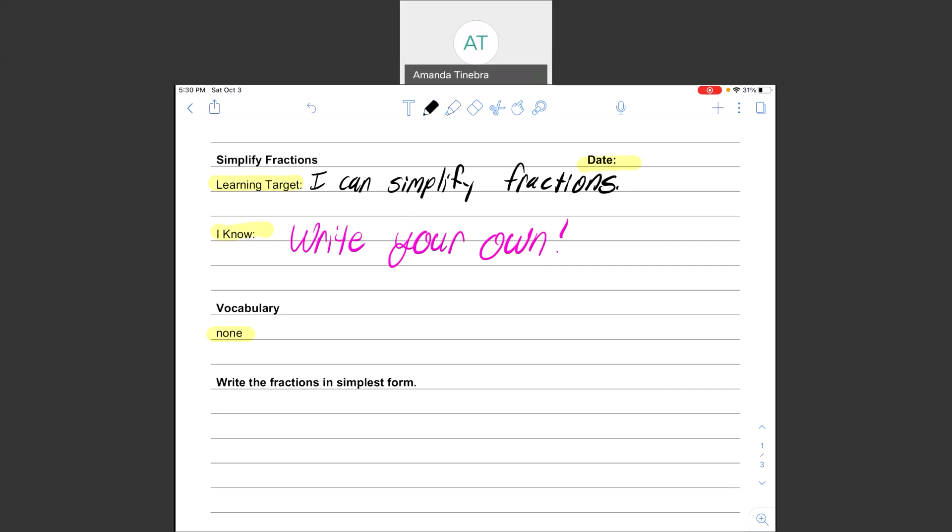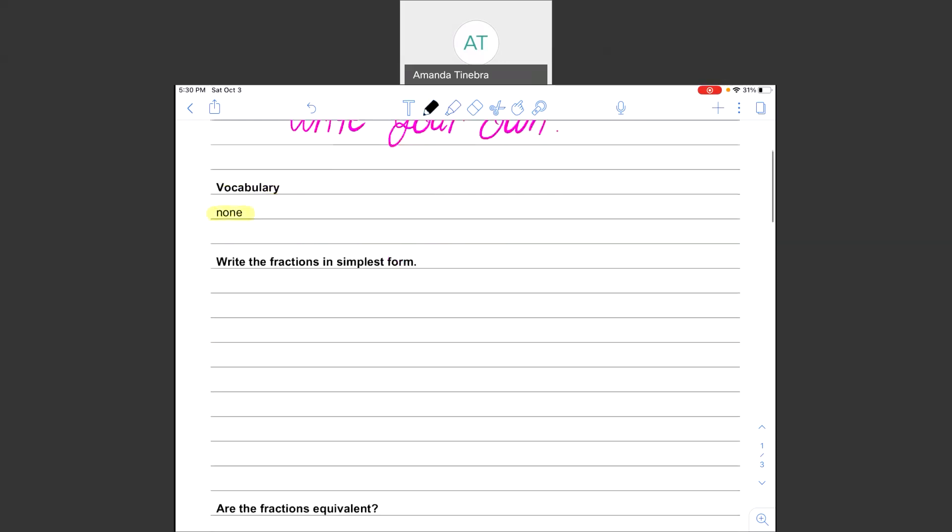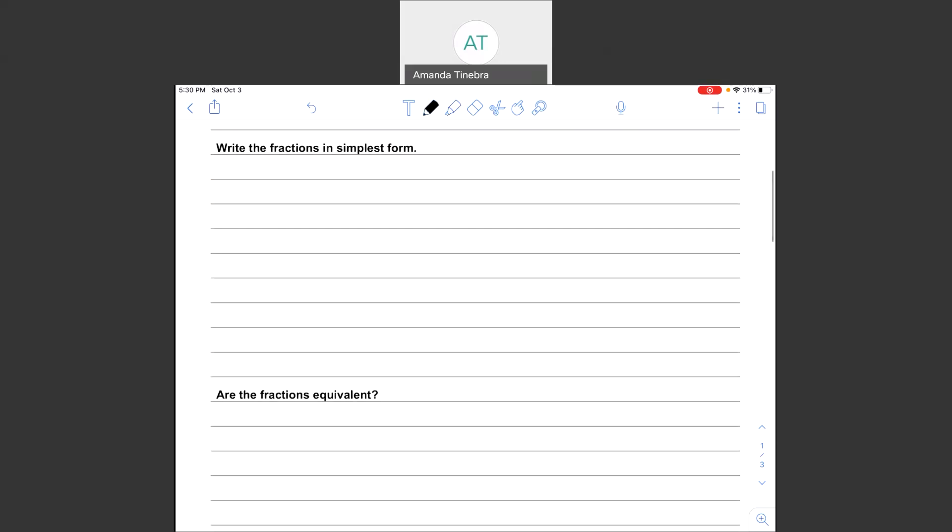There's a few different types of problems that we're going to be able to do now. The first type of problem is just write a fraction in simplest form. So let's say we have the fraction 32 over 72. If I wanted to write this fraction in simplest form, that means that I need to simplify this until the numerator and the denominator are relatively prime.